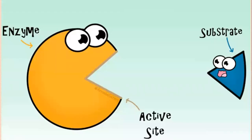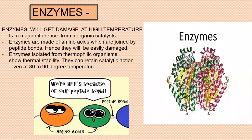Okay children, here we are discussing the role of enzymes in metabolic reactions. Metabolism is the life-sustaining chemical reactions in organisms. It is controlled and regulated by enzymes, and most enzymes are proteins. Proteins are made of amino acids joined by peptide bonds, and these peptide bonds are very weak bonds that may be damaged at high temperatures.